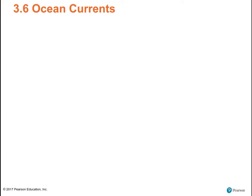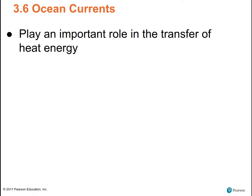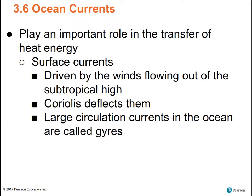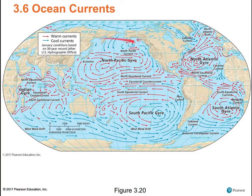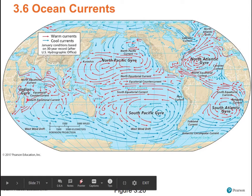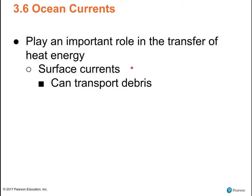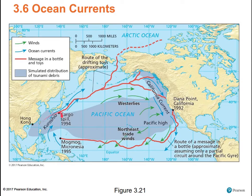Surface winds drive ocean currents. Ocean currents are incredibly important in transferring heat energy from the tropics to the poles — they drive surface currents. Surface currents are driven by the winds flowing out of the subtropical high, deflected by Coriolis. These large circular currents in the ocean are called gyres — clockwise around the North Pacific gyre, counterclockwise around the South Pacific gyre, clockwise around the North Atlantic gyre, counterclockwise around the South Atlantic gyre. These currents take years to make a complete circuit and transport debris. A cargo spill of bathtub toys in 1994 helped researchers map ocean currents in more detail.